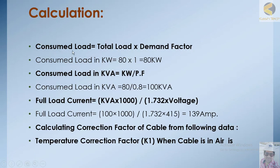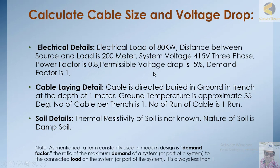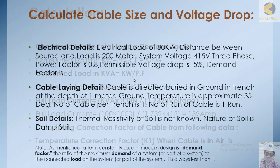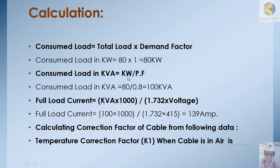Now we start the calculations. Consumed load equals total load multiplied by demand factor. So consumed load equals 80 into 1, which is 80 kilowatt. Consumed load in kVA equals kilowatt divided by power factor, which gives 100 kVA. Full load current equals kVA into 1000 divided by root 3 into voltage.